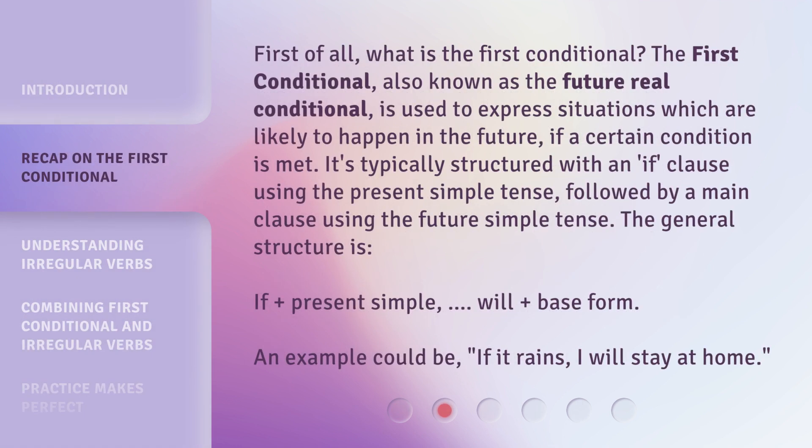First of all, what is the First Conditional? The First Conditional, also known as the Future Real Conditional, is used to express situations which are likely to happen in the future if a certain condition is met. It's typically structured with an if clause using the present simple tense, followed by a main clause using the future simple tense. The general structure is: if plus present simple, will plus base form. An example could be: if it rains, I will stay at home.